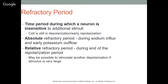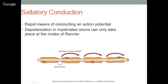Saltatory conduction is the rapid means of conducting an action potential along myelinated axons. Depolarization in myelinated axons only takes place at the nodes of Ranvier — the impulse jumps from node to node rather than traveling continuously. It's like cliff notes: you skip the middle and jump from point to point, moving the impulse much faster.